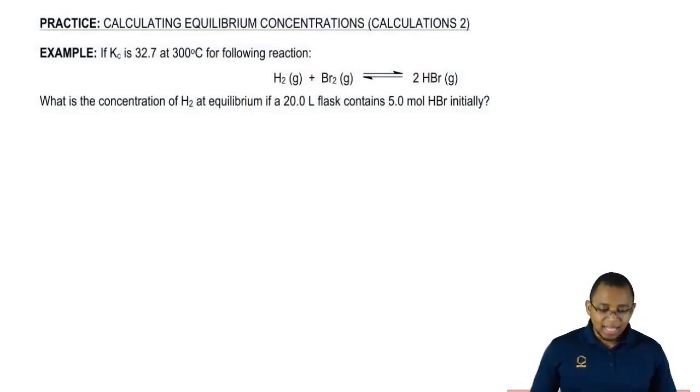If we take a look at this first one, it says, if Kc is 32.7 at 300 degrees Celsius for the following reaction, the reaction is one mole of H2 gas plus one mole of Br2 gas gives us two moles of HBr gas.